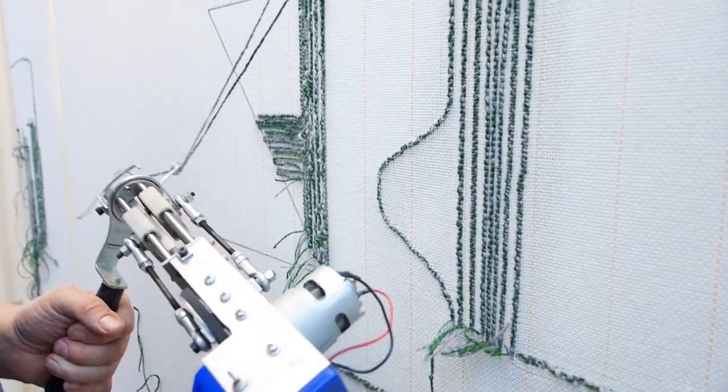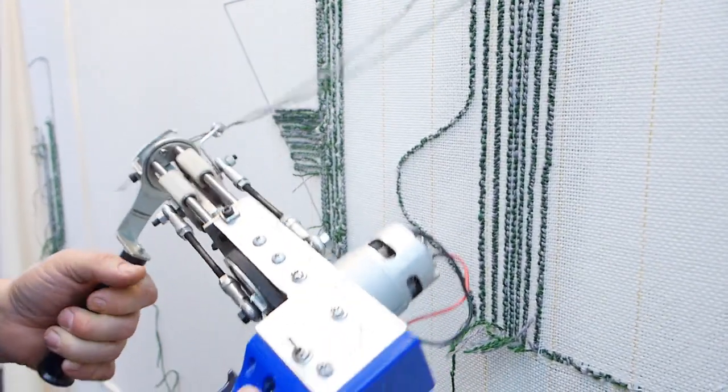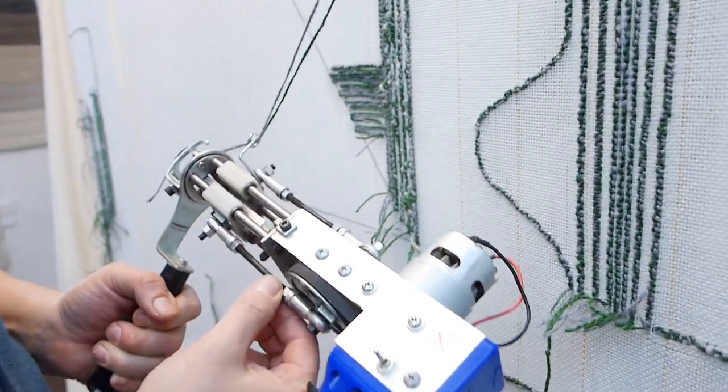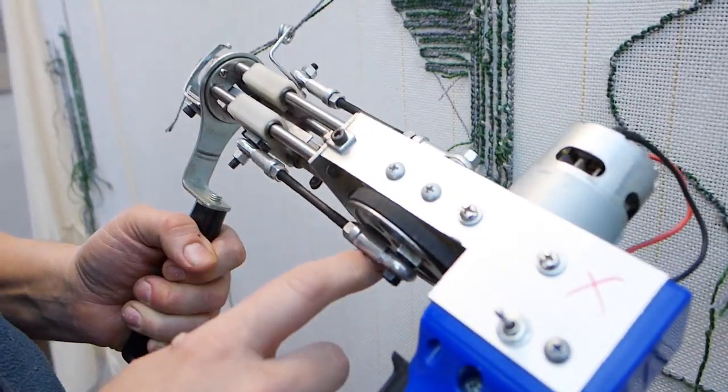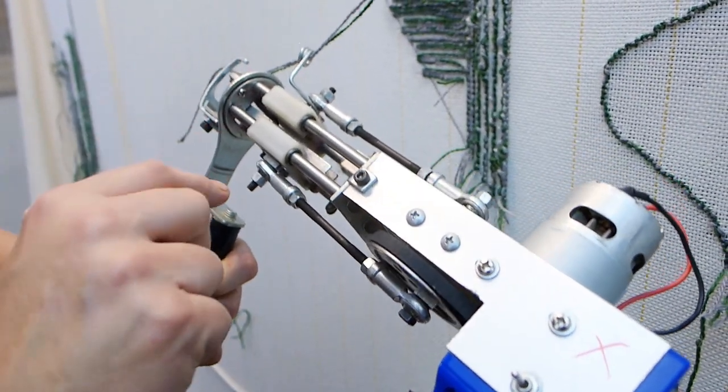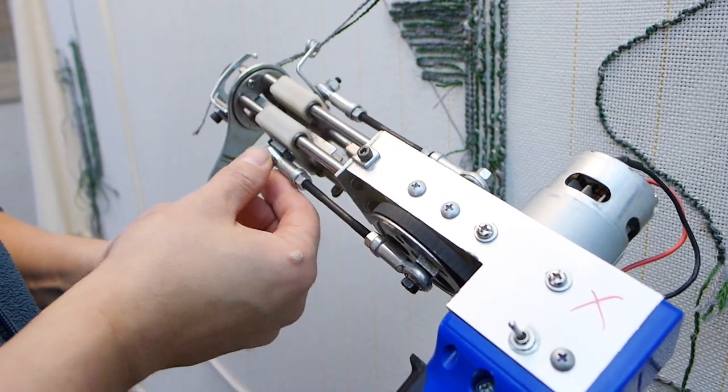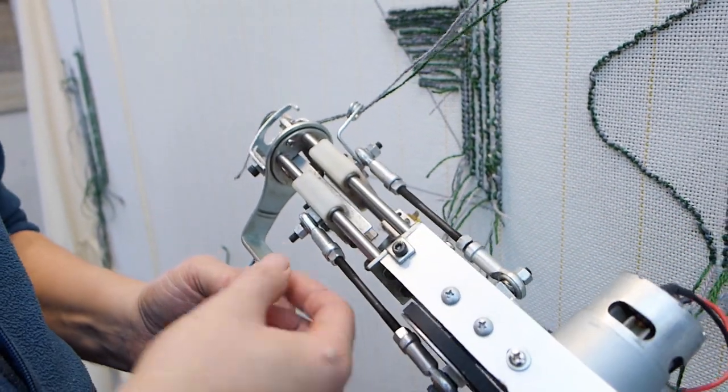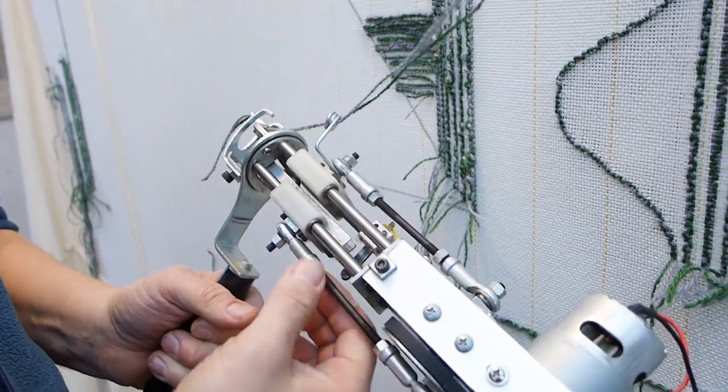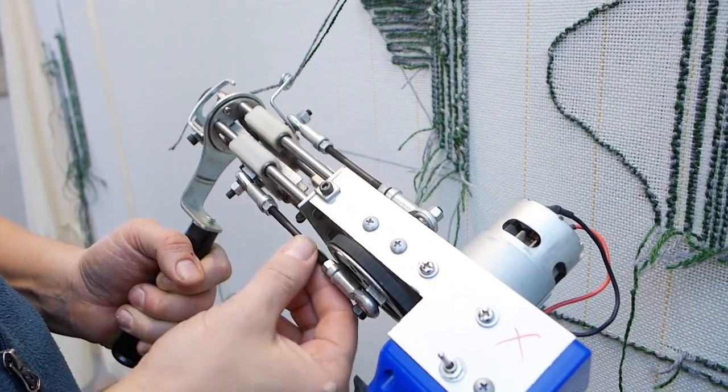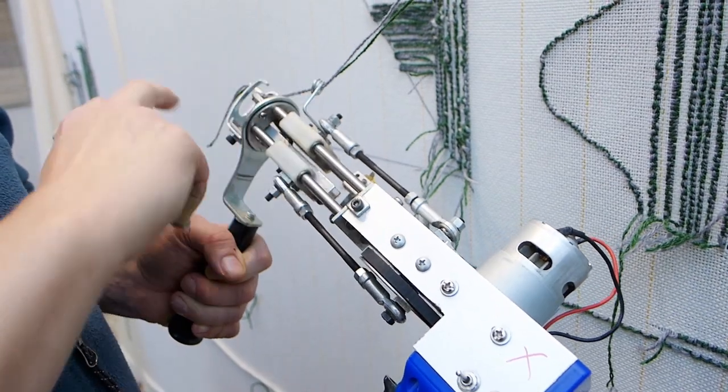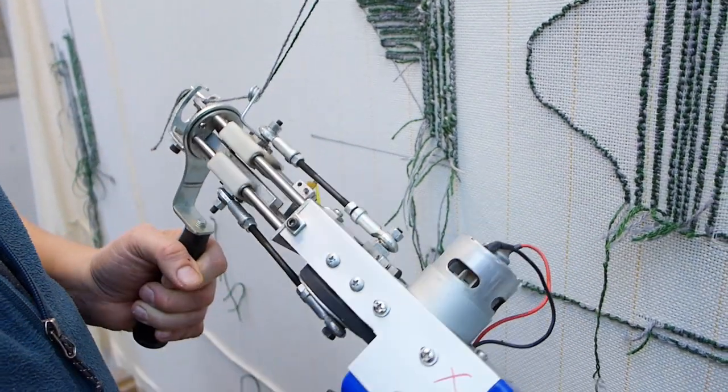One thing I should mention about both of the tufting guns is technically you can adjust the pile height by adjusting this bar here. There's instructions on that. There's a whole video about that. But I would encourage you to use the current factory setting that you get until you get the feel of how everything works. Because if you don't adjust this bar correctly, then the mechanical parts of your machine won't work properly.